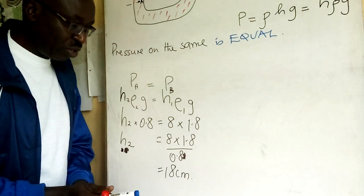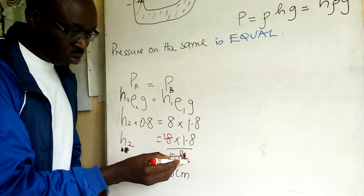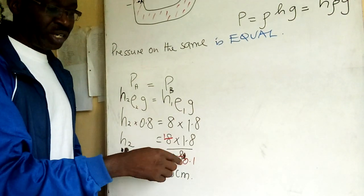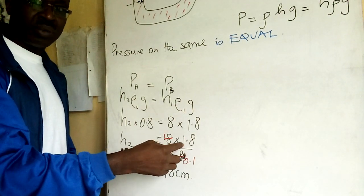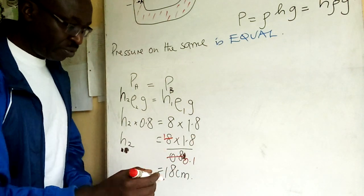You can go ahead. How did I get that? 8 times 1.8. So multiply both sides, top by 10, bottom by 10, you get 18. Very good.